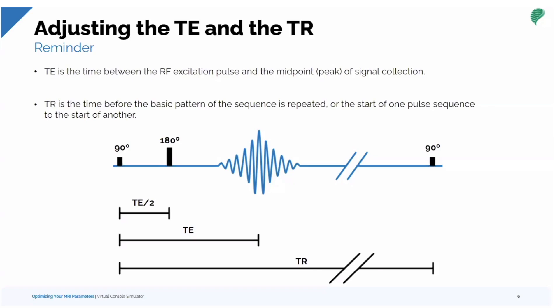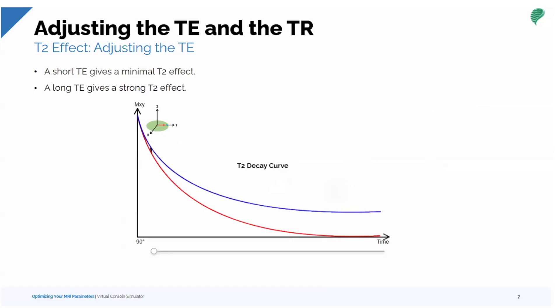Our contrast weighting is based on the values that we input on the system for T1 and T2. Looking at the decay curves and starting with the T2 effect — T2 actually occurs first. Once the magnetization has been excited and moves into the transverse plane, it begins to decay. If we use a short TE and take our snapshot, we have minimal T2 effect. With a long TE, there's a great difference between these two tissues. So a later TE shows greater differentiation of signal between tissues.